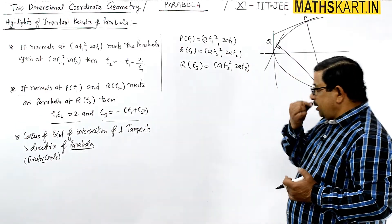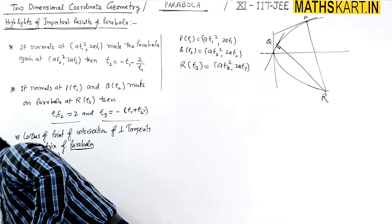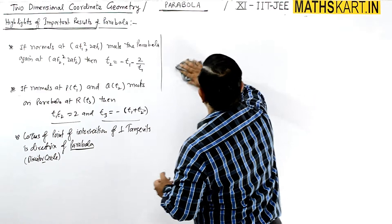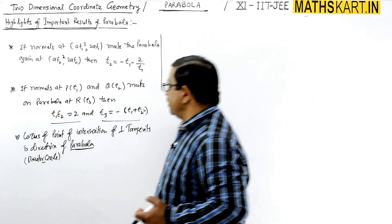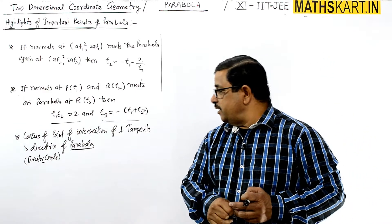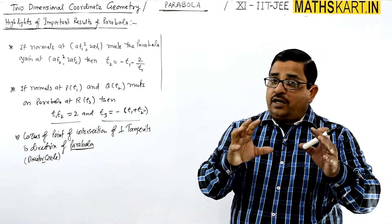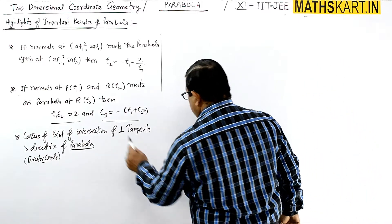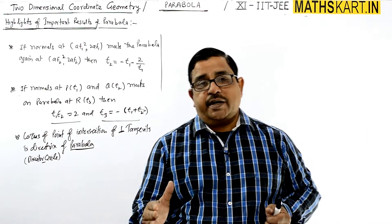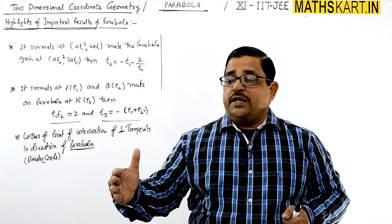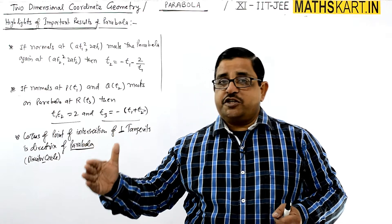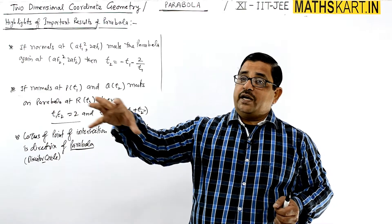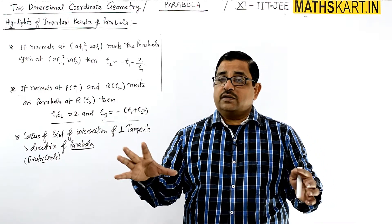Next, the third property: the locus of the point of intersection of perpendicular tangents is the directrix of the parabola. In conic sections, many definitions are general across all conics — chord of contact, pair of tangents, equation of tangent, and director circle all follow the same framework for circle, parabola, ellipse, and hyperbola.